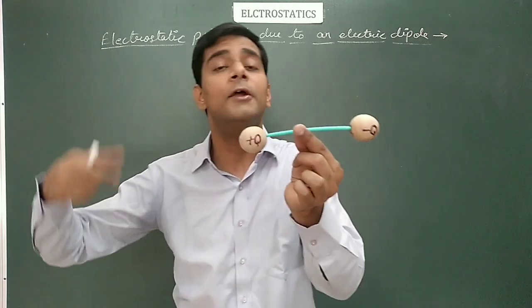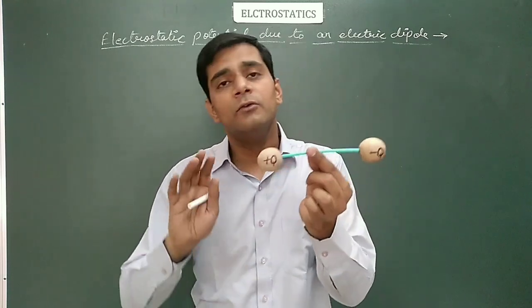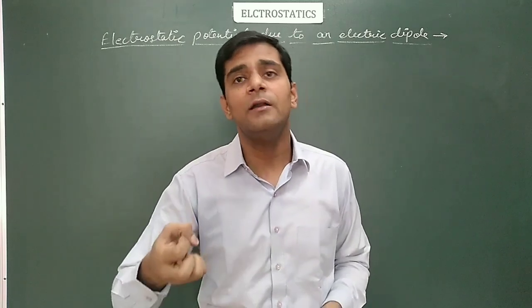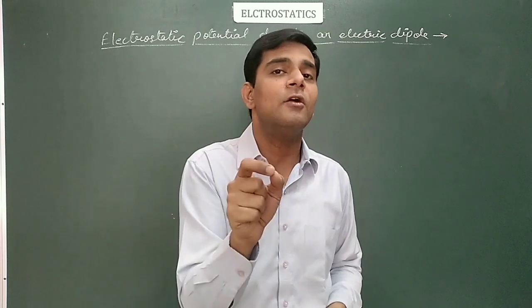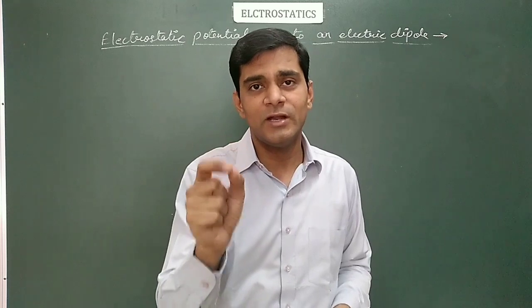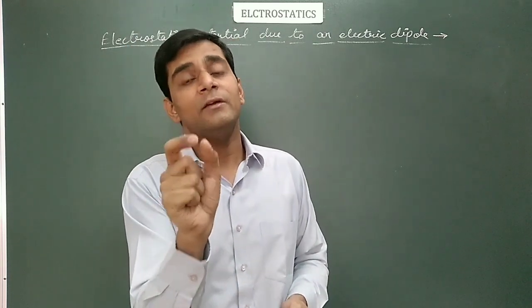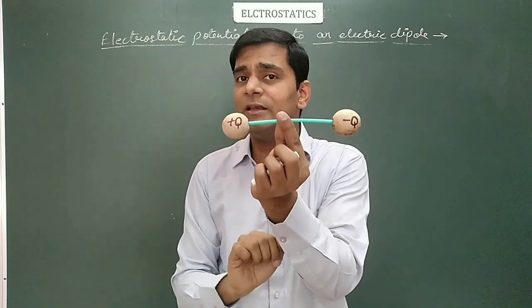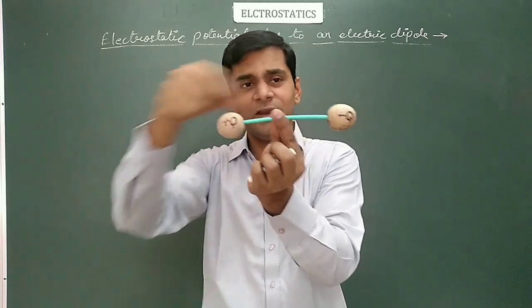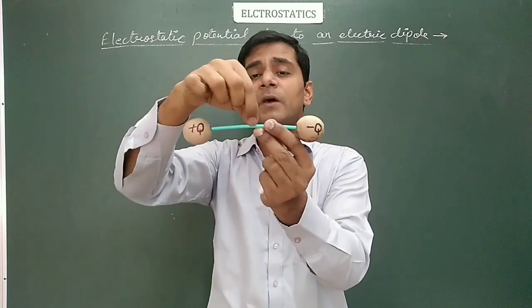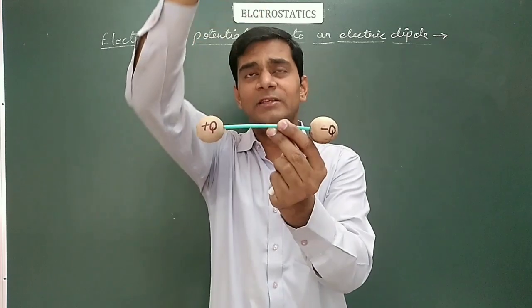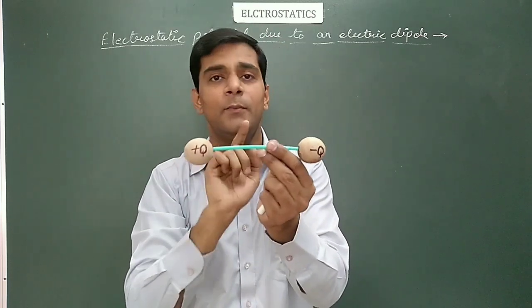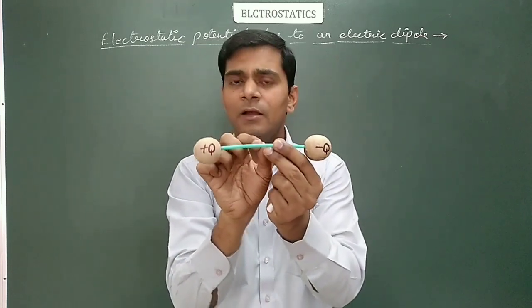Now let's define the electric dipole. An electric dipole is an arrangement of two equal and opposite charges — one is +q and the other is −q — separated by a small distance. Such arrangements are found in non-polar molecules where the centers of positive and negative charges are separated, making the molecule behave like a dipole.